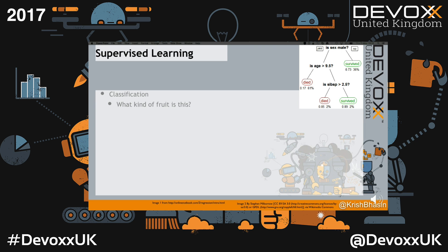Trees obviously aren't the only model or algorithm you can use here. There are many others — things like support vector machines, and you've probably heard of neural networks. Unfortunately I haven't got time to go into them in a 15-minute talk, but they are more widely used than trees and are definitely worth reading into if it catches your interest.